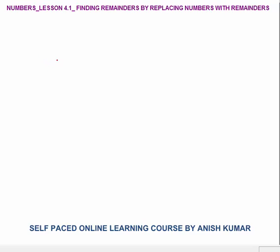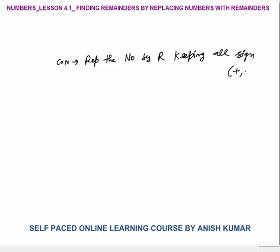The concept says that you have to replace the numbers by their remainders, keeping all signs — plus, minus, product — as they are. You don't have to touch them; keep them as they are, place the numbers with remainders, and you will get your final answer.